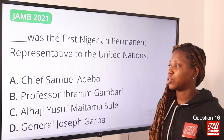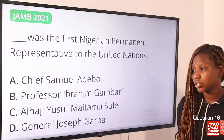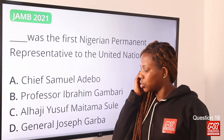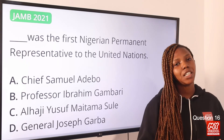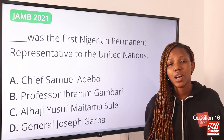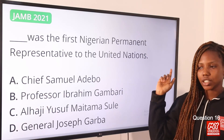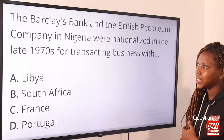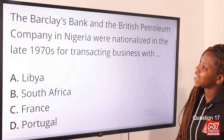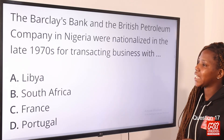Question sixteen: Who was the first Nigerian permanent representative to the United Nations? The answer is option D, General Joseph Garba. He was appointed in 1984 as permanent representative to the United Nations. Option D is the correct answer.